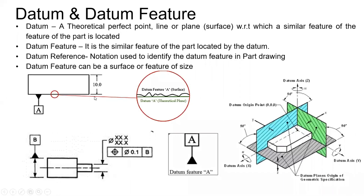Without datums, each inspection engineer would measure dimensions at different points and get different values, leading to inaccuracy. The CMM requires accurate positioning of the part for accurate dimensional inspection. To resolve this, we use datum features — identifying the flat surface from which measurements are made. The CMM creates an imaginary plane from a few surface points and measures all other dimensions reliably from that plane.